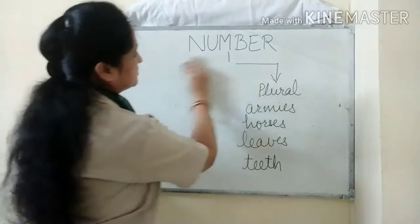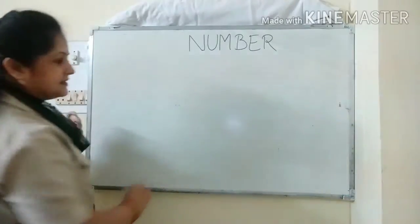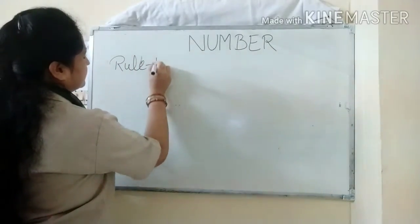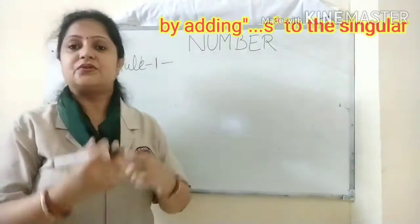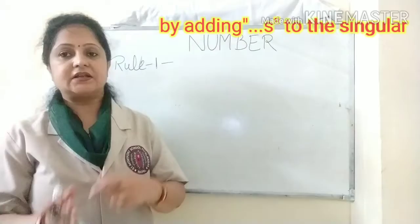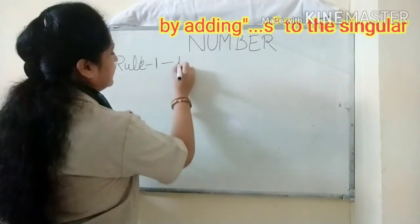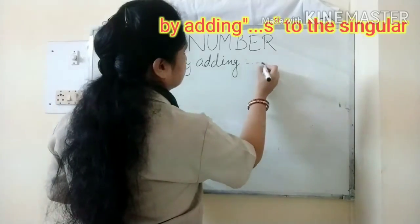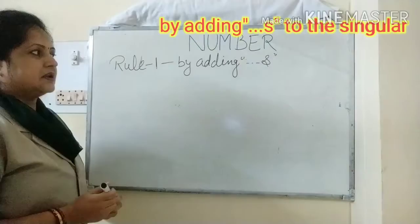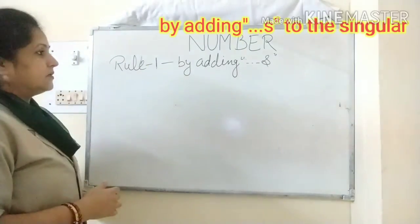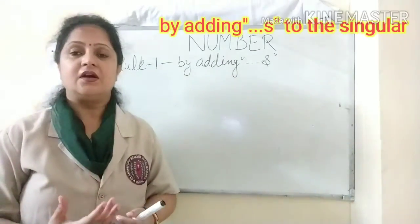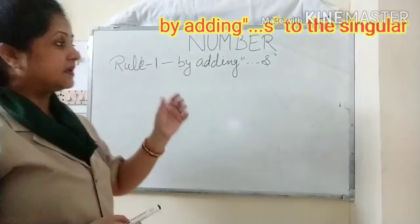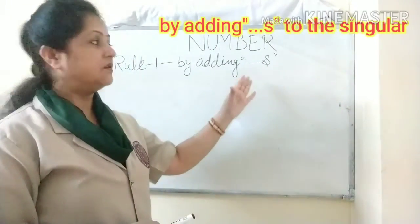Rule One: By adding 's' to the singular number, we can convert it into plural number. Here 's' gives us the sound of 's' or 'z'. Just like: place — places; girl — girls. Here we are getting the sound of 's' or 'z' from this 's'.